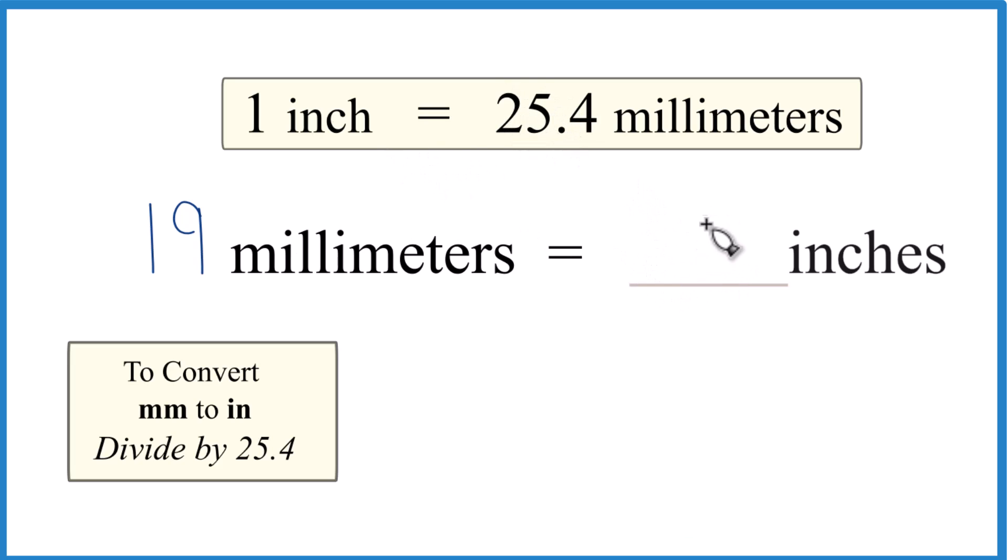So this number here, one inch equals 25.4 millimeters, it's a conversion factor. It's one you either memorize or look up. So what we'll do when we go from millimeters to inches, we divide by 25.4.